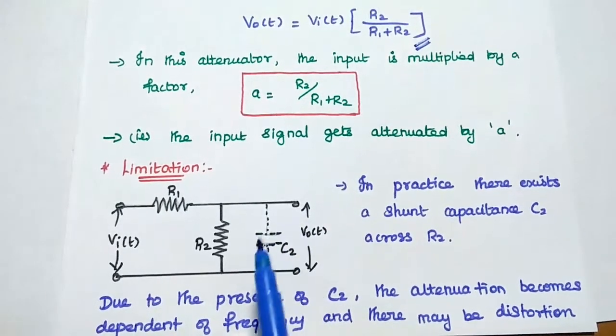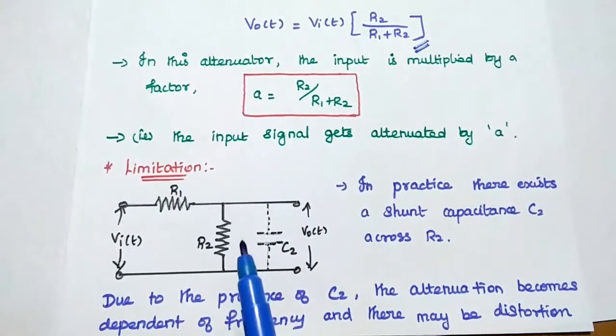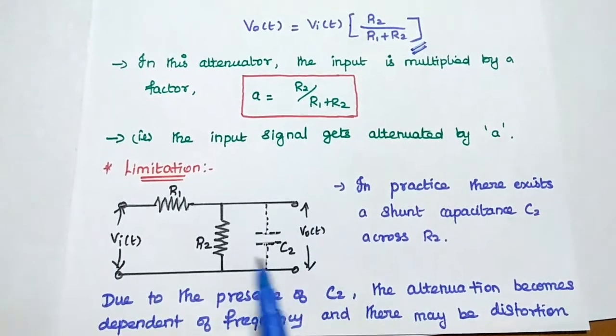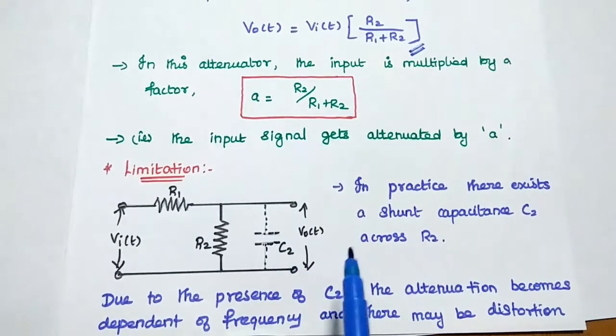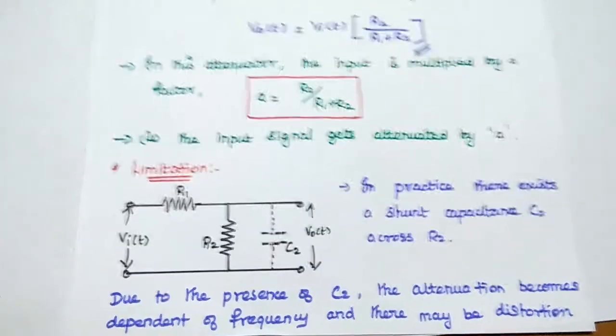This C2 can be known as stray capacitance. We are going to give the attenuator output as input to this C2. Because of this C2 there may be some distortion. That is the major limitation of this attenuator.